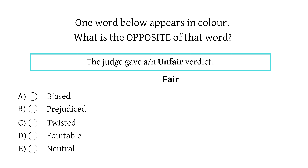So let's break down the options. Option A is biased, and bias means that you're showing favouritism, which is similar to unfair, and therefore we can eliminate option A. Option B is prejudice, and this again implies you're unfair or biased, so we'll eliminate option B as well.